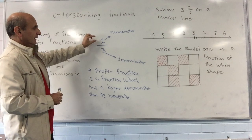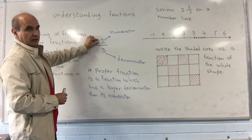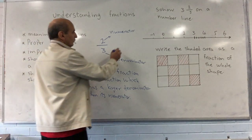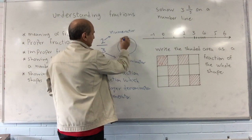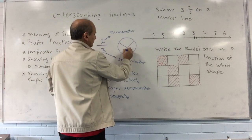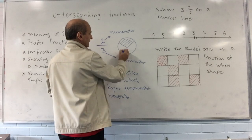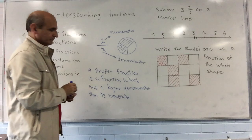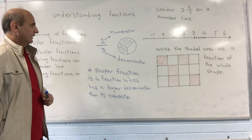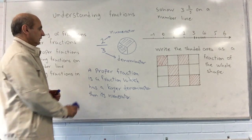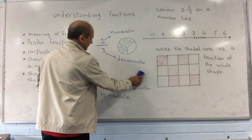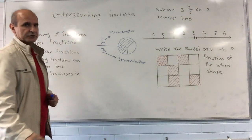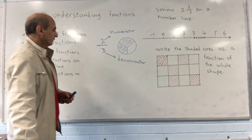For example, we had only two parts of a pizza which had been divided into three parts. So all you have is two parts — this and this — which is less than the whole pizza. That is the meaning of a proper fraction.